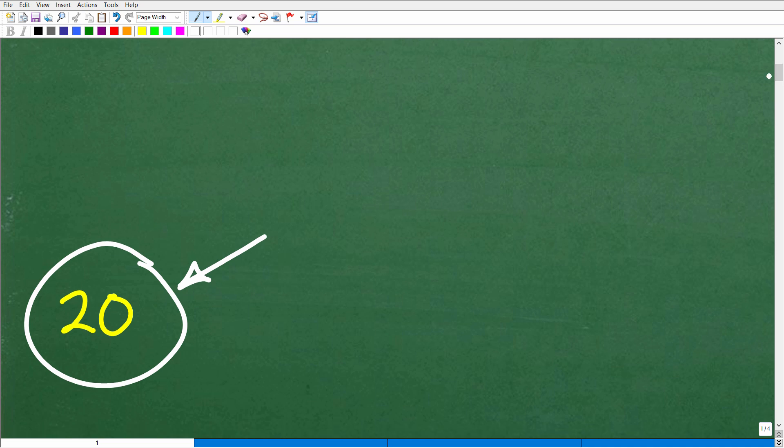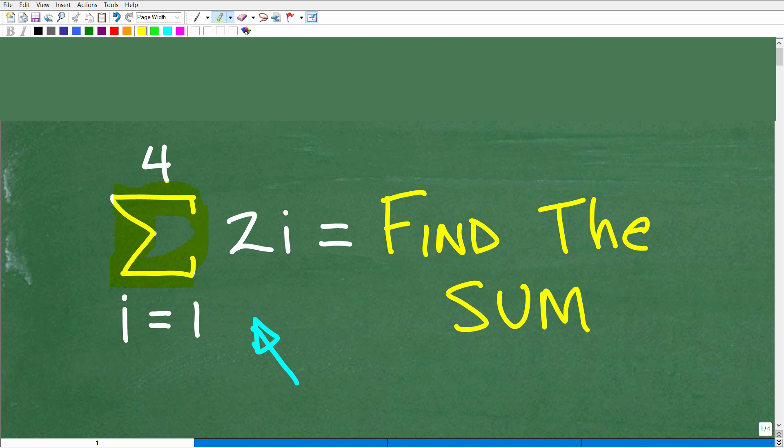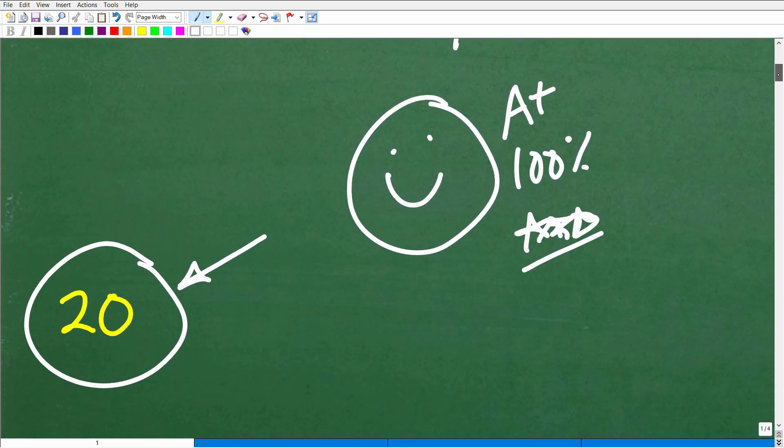Of course, I'm going to explain that in one second. But if you got this right, that is fantastic. Matter of fact, let me give you a nice little happy face. And A plus, a 100 percent and a few stars. So you can tell your friends and family that you understand sigma notation or summation notation. That's what this is right here. And the sigma is just basically represents the sum of something.